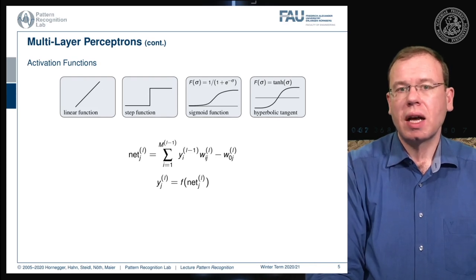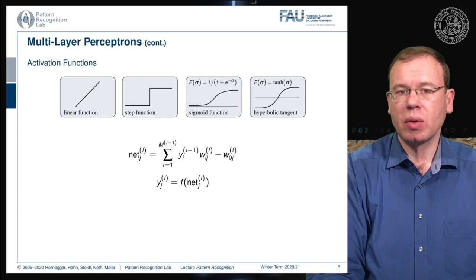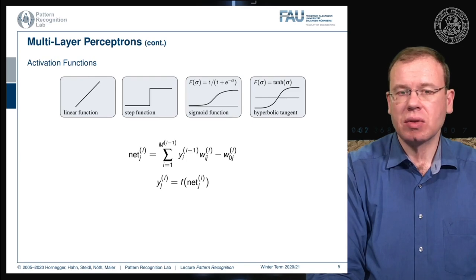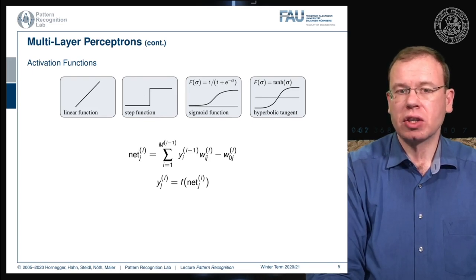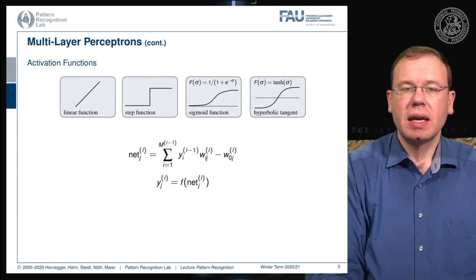We can write down the units of these networks as sums over the previous layer. We have some y_i that is the output of layer l minus one, multiplied with weight w_ij, plus a bias w_0j in the current layer l. This sum constructs the net output, which is then run through the activation function f, introducing the non-linearity that produces the output of layer l.